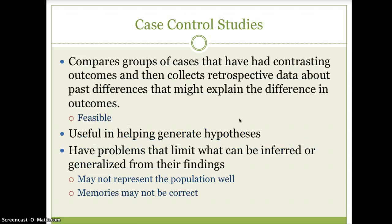We have case control studies, and these compare groups of cases that have had contrasting outcomes, then collect retrospective data about past differences that might help explain the difference in outcomes. Similar to cross-sectional designs, they are feasible because they can be taken at one point in time. They are also useful in generating hypotheses, but they have problems that can limit what can be inferred or generalized — they may not represent the population well, and memories of those in the case control studies may not be correct.